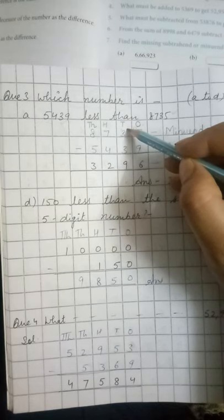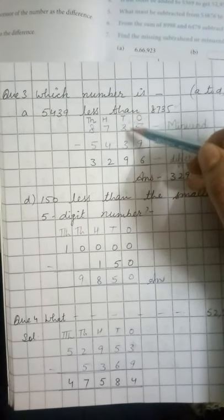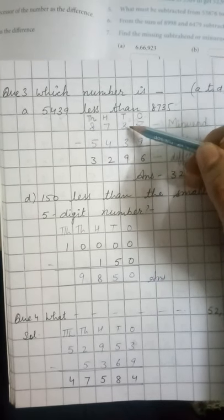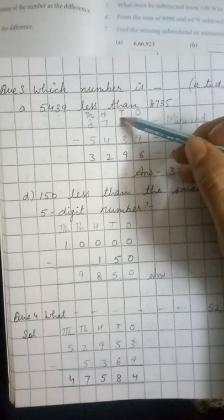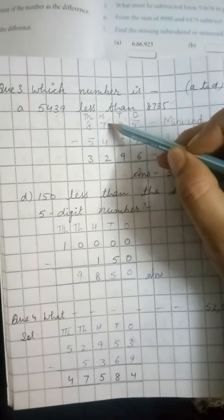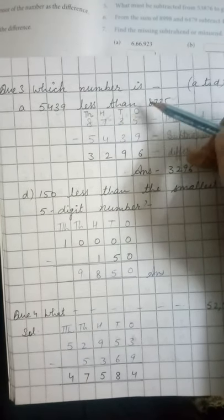Now we are left with 2. So 2 is less than 3. Again, we have to borrow from our neighbor. So it will become 6 and we will carry 10. It will become 12.